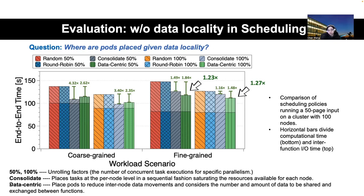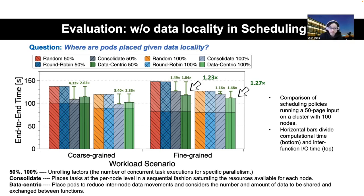We observe 4.3 times and 2.6 times improvement for consolidated data-centric placement solutions for coarse-grained and fine-grained benchmarks respectively. For fine-grained benchmarks the improvement is smaller, but data-centric solutions still improve at least 1.5 times in end-to-end performance. This also tells us that the right granularity of decomposing your pipeline is very important — you do not want to partition your application too thin, as that minimizes data transfers between stages.